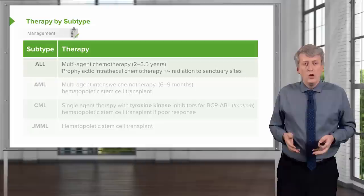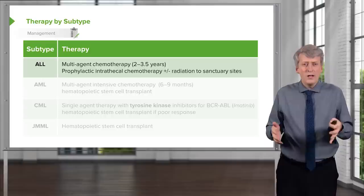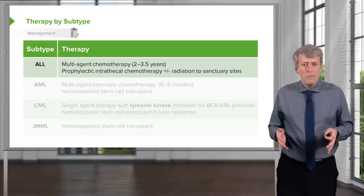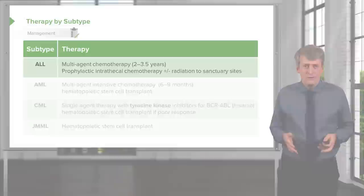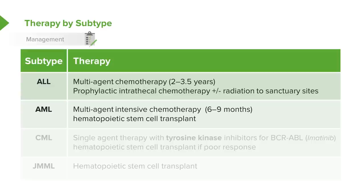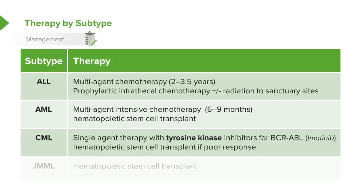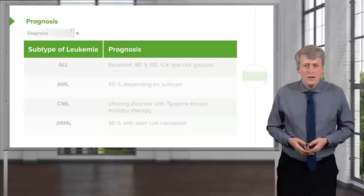In ALL, treatment involves multi-agent chemotherapy for 2 to 3.5 years, along with prophylactic intrathecal chemotherapy and/or radiation to sanctuary sites. For AML, multi-agent intensive chemotherapy is given for 6 to 9 months, and some patients will warrant a hematopoietic stem cell transplant. For CML, we give single-agent therapy with tyrosine kinase inhibitors targeting the BCR-ABL gene, with a hematopoietic stem cell transplant for a poor response. For JMML, these patients often require a bone marrow transplant.